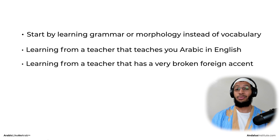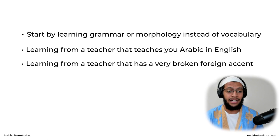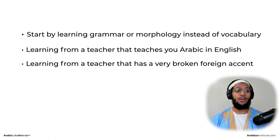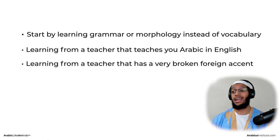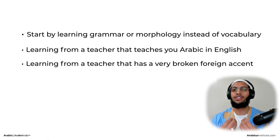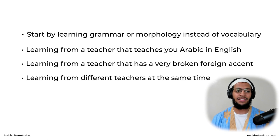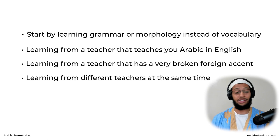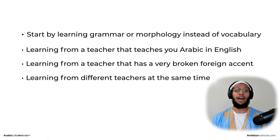Another mistake is learning from a teacher with a very broken foreign accent. For example, a brother who goes to study Arabic and after a year is teaching Al-Ajurumiya — whether in English or Arabic — but it's so broken that the student can't benefit from the actual fasaha and eloquence that Arabic has. Also, learning from different teachers at the same time will make you go crazy; it's like reading different books and different opinions all at once.